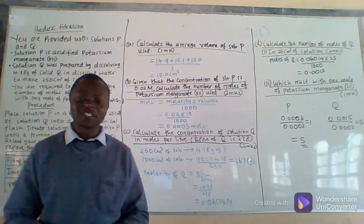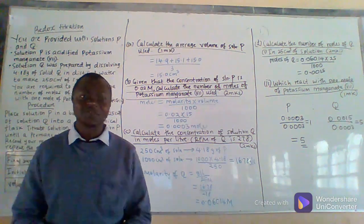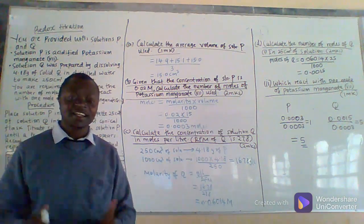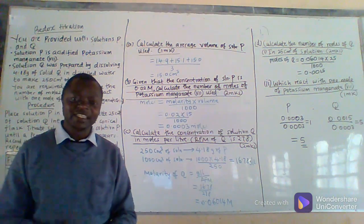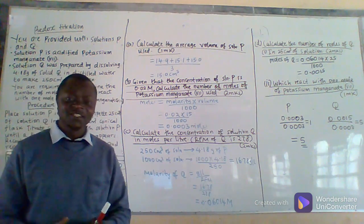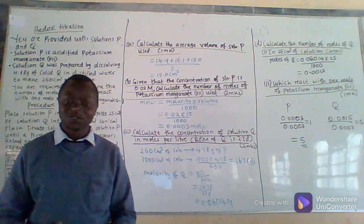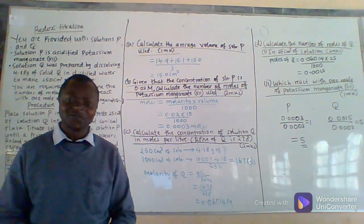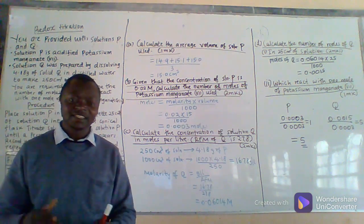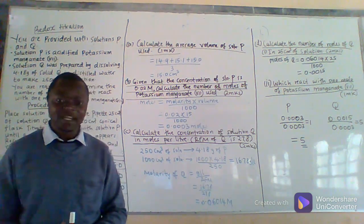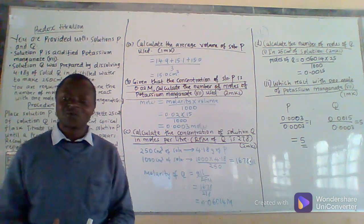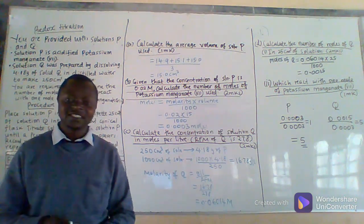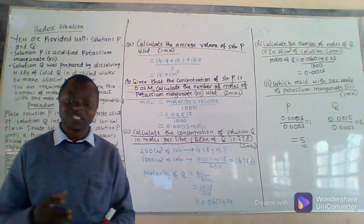Today I want to take you through redox titration. Redox titration is a type of titration that you carry out without using any indicator, and in this type of titration you are reacting two solutions. One of the solutions normally acts as an oxidizing agent and another one acts as a reducing agent. The oxidizing agent undergoes reduction and the reducing agent undergoes oxidation, and when the reaction is complete there is a color change, so you don't need to use an indicator at the end.